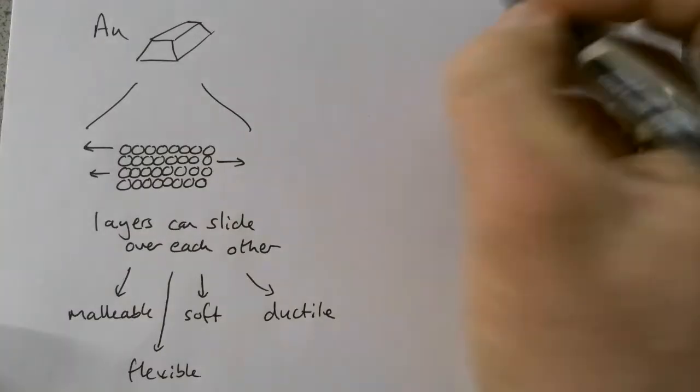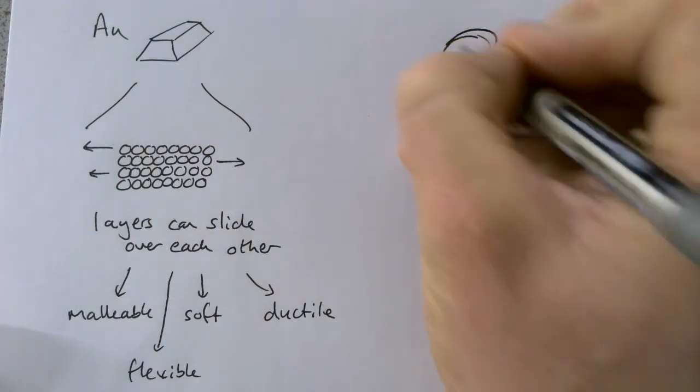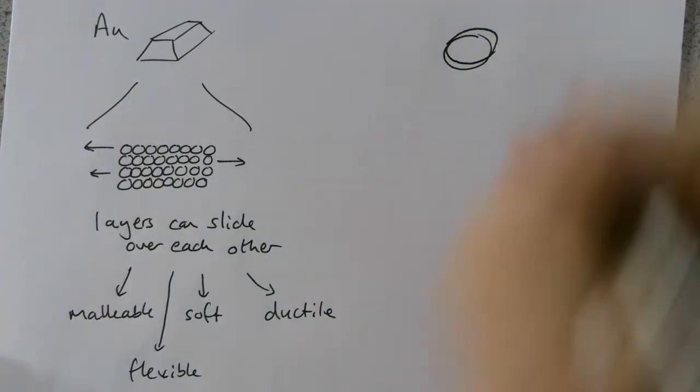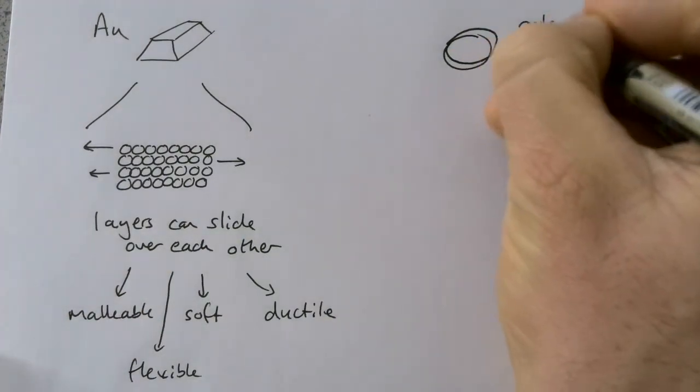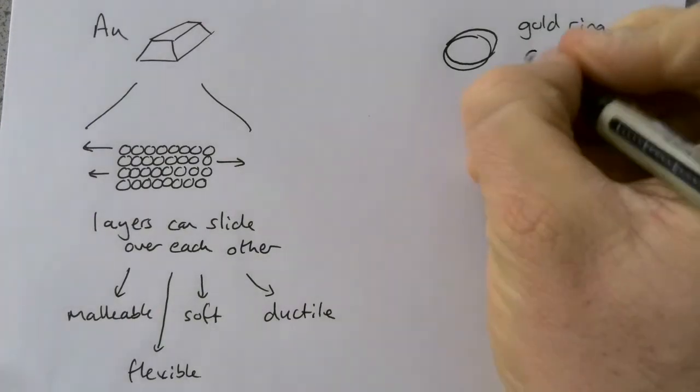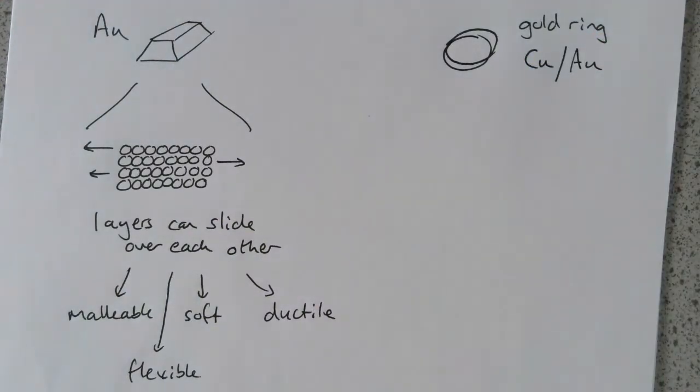Now, if we think about a gold alloy, and an example, I'm trying to draw a ring here. Now, a gold ring is not made out of pure gold. We wouldn't want to use pure gold to make a ring, because particularly, it's quite soft and flexible, if it was pure gold. So, we use an alloy, which is mainly gold, but it is a mixture of copper and gold.